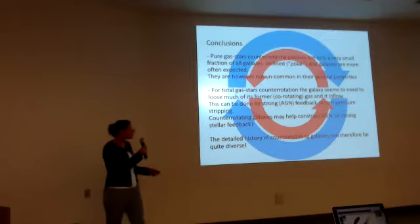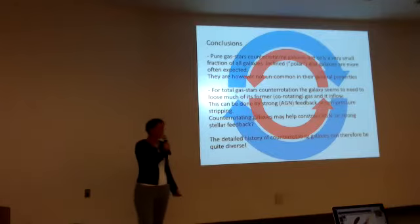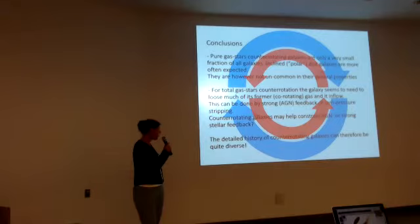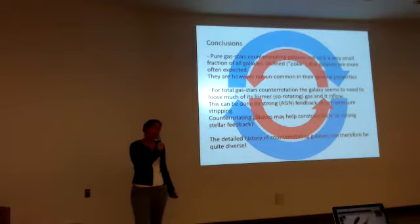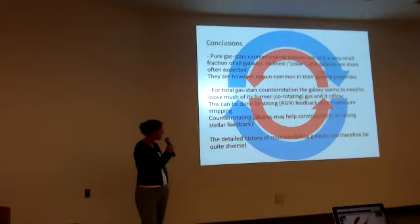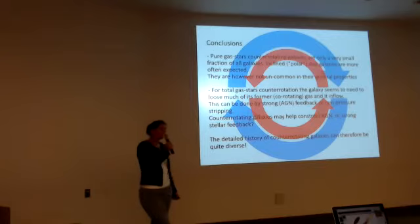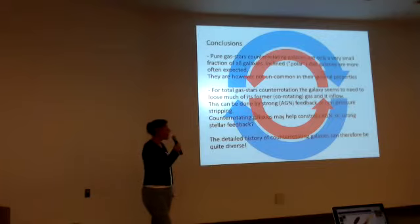This can be done by strong AGN feedback or by ram pressure stripping, and this could lead to very diverse histories for these counter-rotating systems. But it might also mean that counter-rotating systems might help us understand how strong this AGN feedback could, or has to be, if we compare them to observed systems. My main point is that the detailed history of counter-rotating galaxies can be quite diverse. There doesn't need to be a satellite accretion, a merger, or cosmic gas accretion. There can be much more happening in the system.